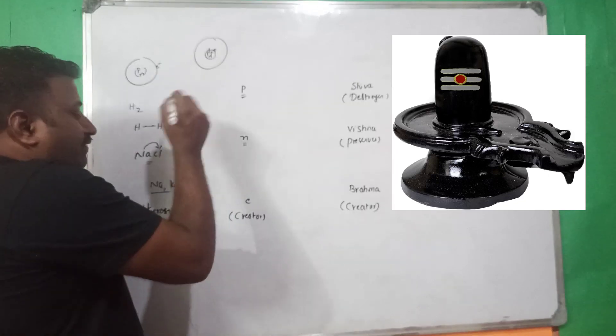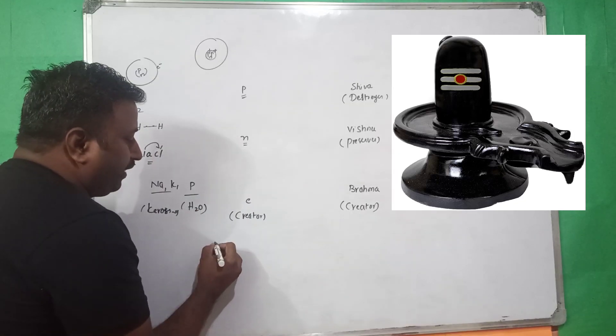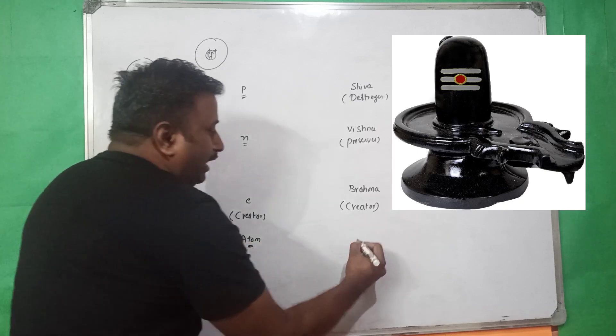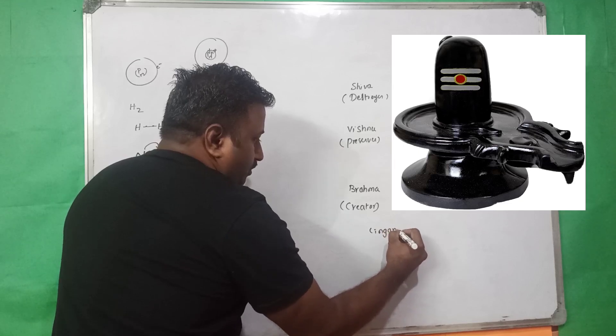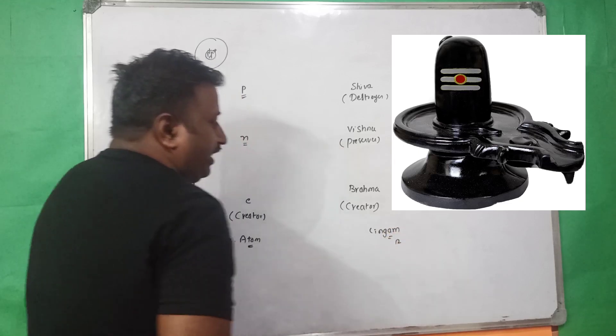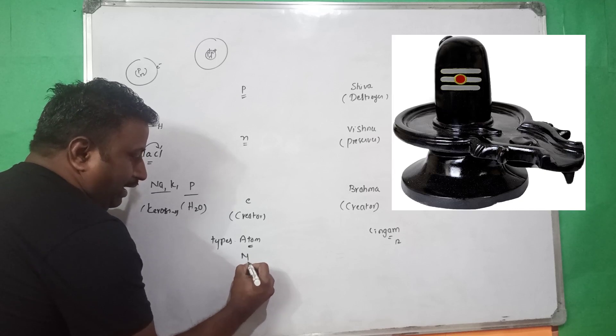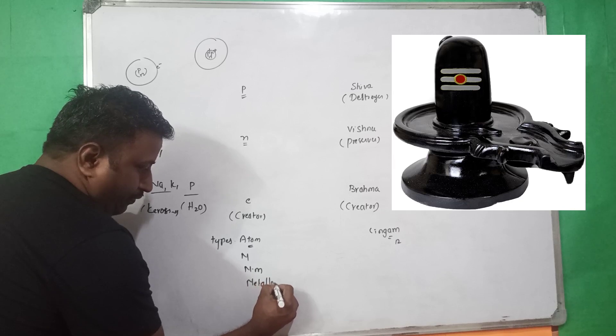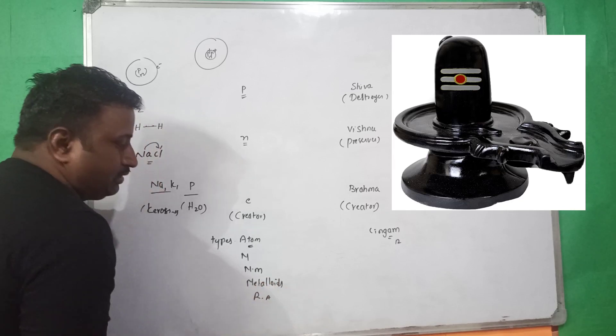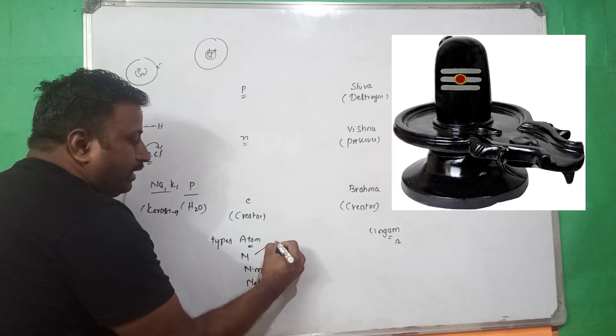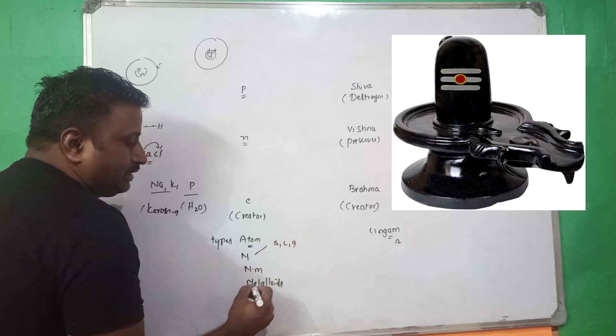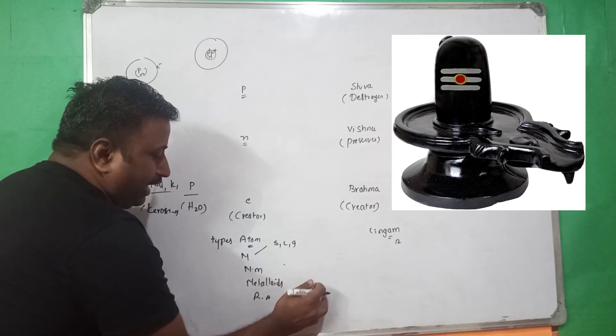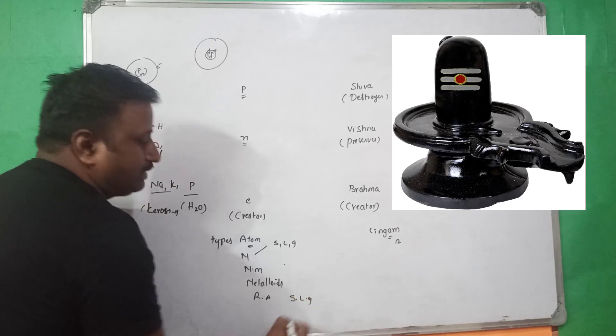If you observe, there are different types of atoms and there are different types of Lingams. There are 12 types of Lingams and there are metal atoms, non-metal atoms, metalloids as well as radioactive elements. Solid, liquid, and gas can exist.